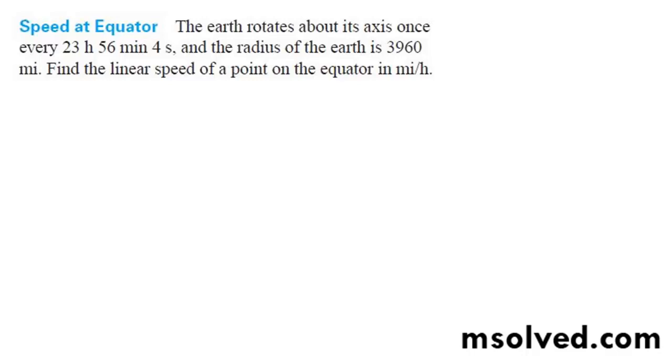So this is kind of a cool problem. We've got an Earth that rotates about its axis once every 23 hours, 56 minutes, 4 seconds. So a full day is not a perfect 24 hours, but close. But we want to find out the linear speed with which the Earth rotates at.